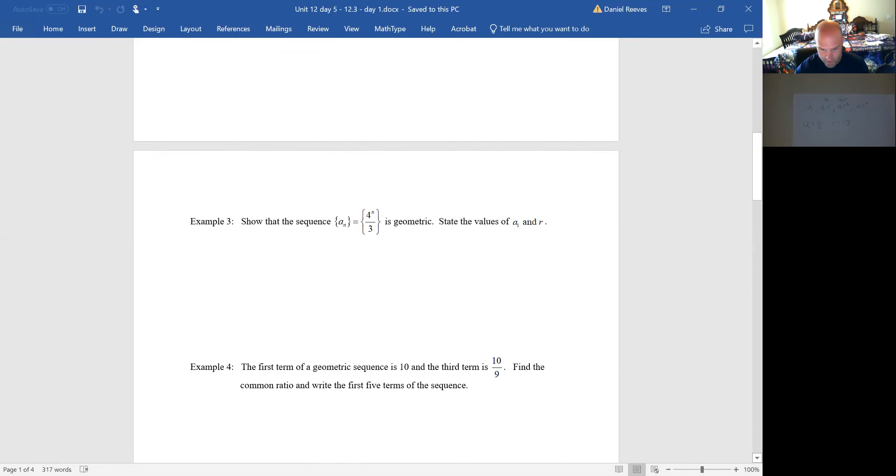Show that this sequence is geometric. Okay. So, my first term is when n equals one. So I get four to the first over three. My second term will be four to the second, sixteen over three. My next one will be sixty-four over three. And two hundred and fifty-six over three as my fourth one. Find the value of a sub one. A sub one, we have written down there, it is four thirds. And what did I multiply four thirds to to get to sixteen thirds? Well, that common ratio is just four.